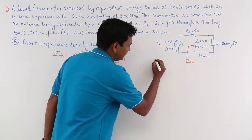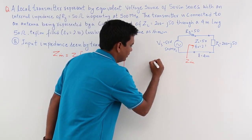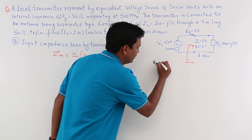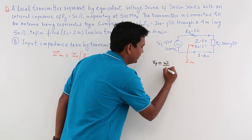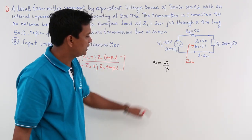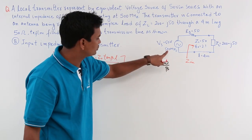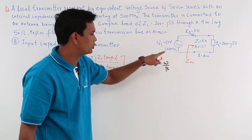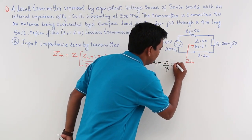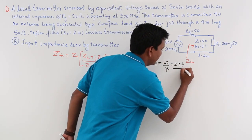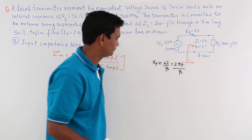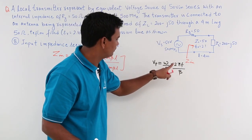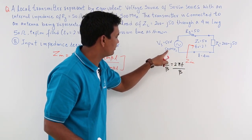What I know is that Vp, the phase velocity, is given by ω/β. Omega I can easily find since the frequency is given to me: ω = 2πf/β, and f comes out to be 500 MHz.